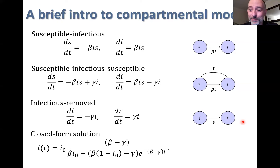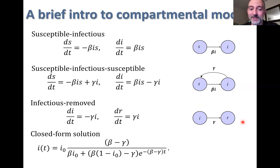This is unfortunate because typically when we're building disease models, we have more than just two states to describe the transmission process of disease.